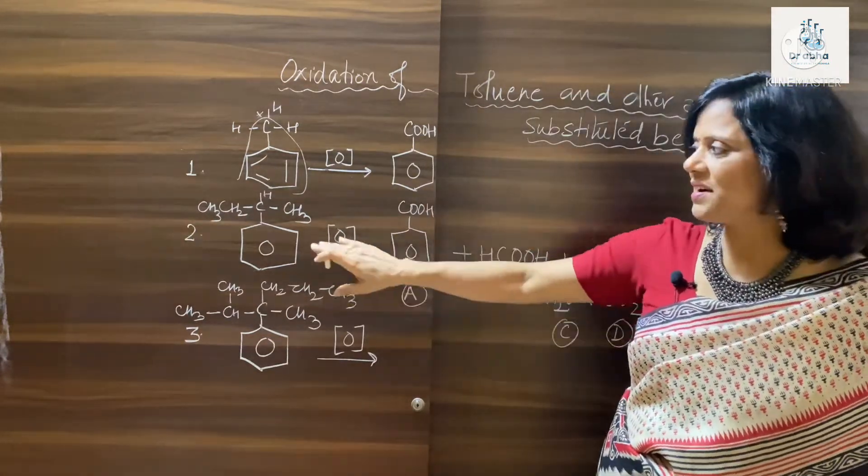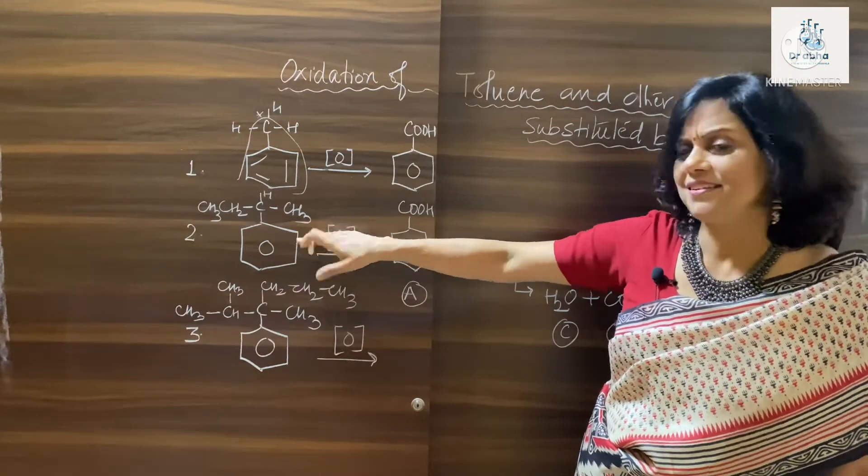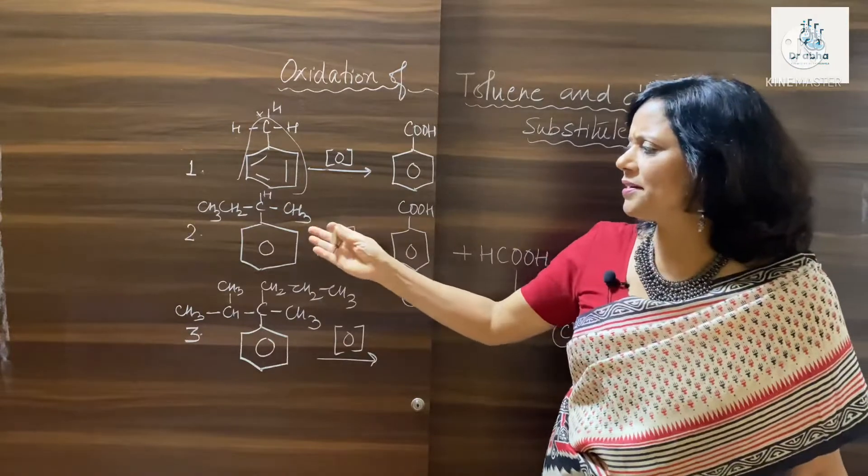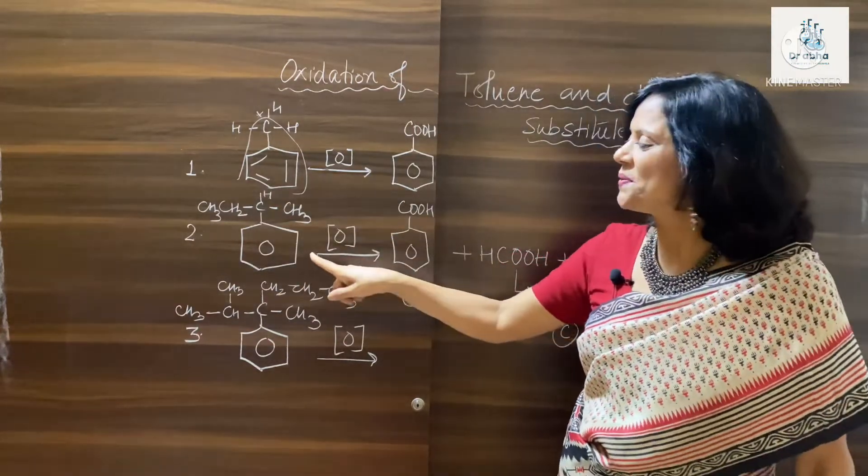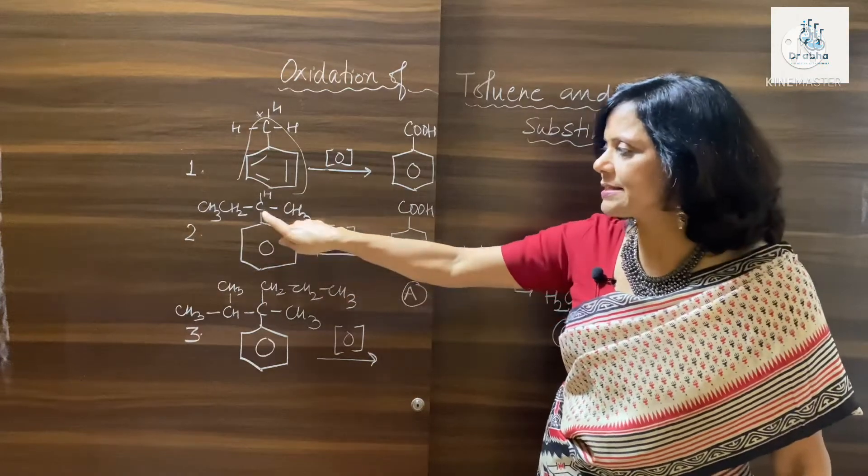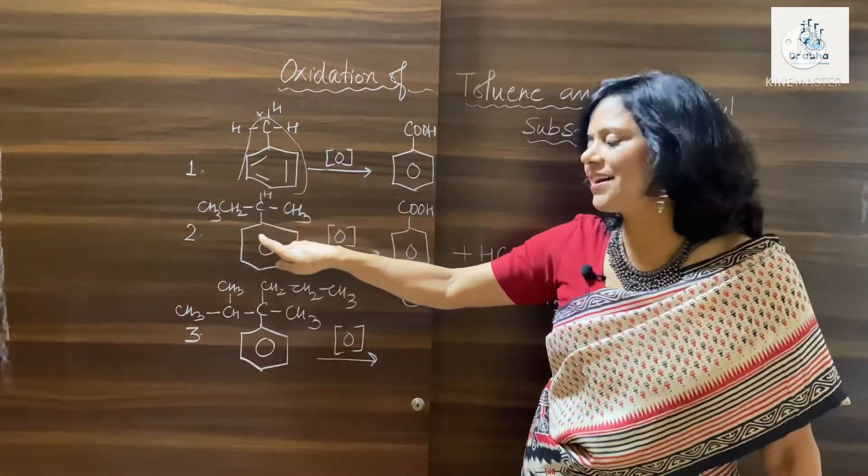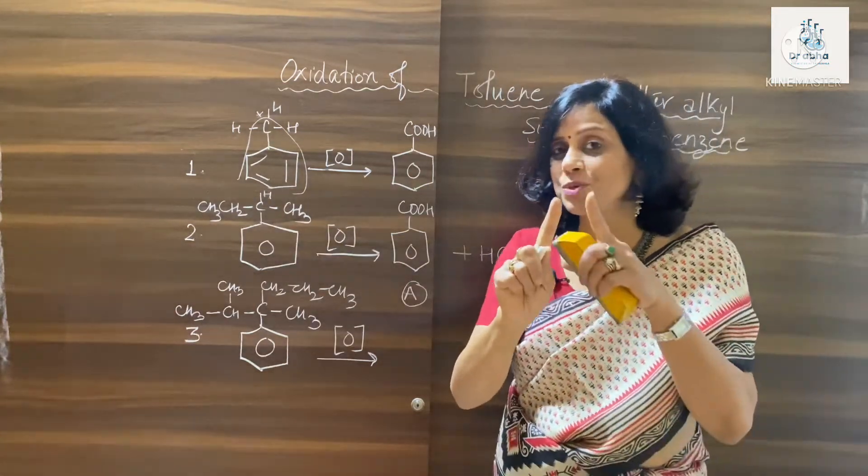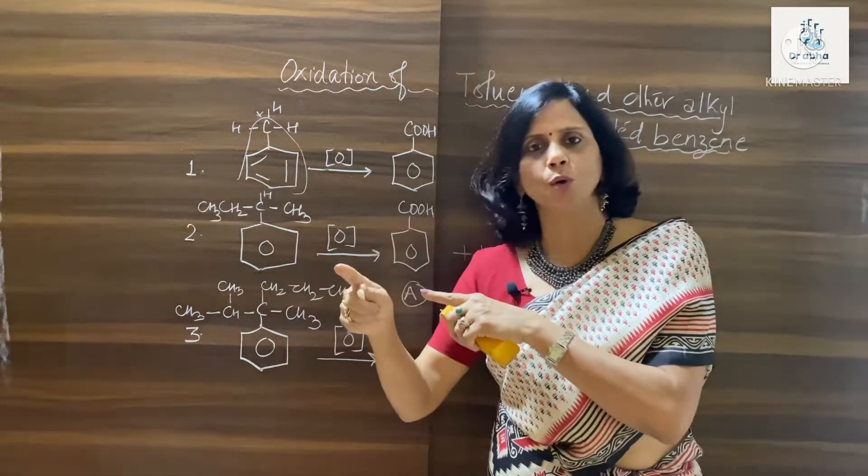Now if we take something like this, if you want you can call it sec-butyl benzene or methylpropyl benzene. So now what is happening is the carbon which is attached to the benzene, that carbon is attached to an alkyl group on one side and another alkyl group on another side.